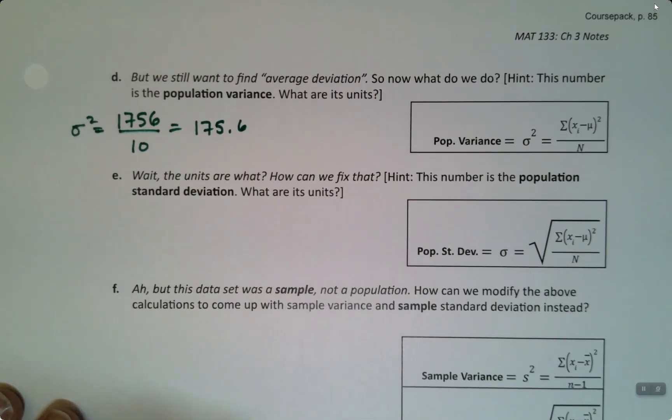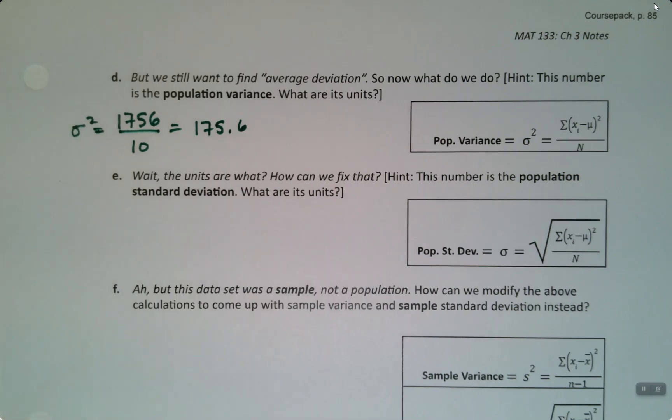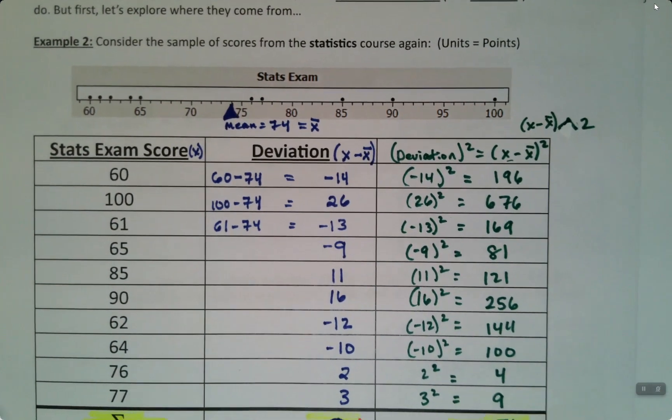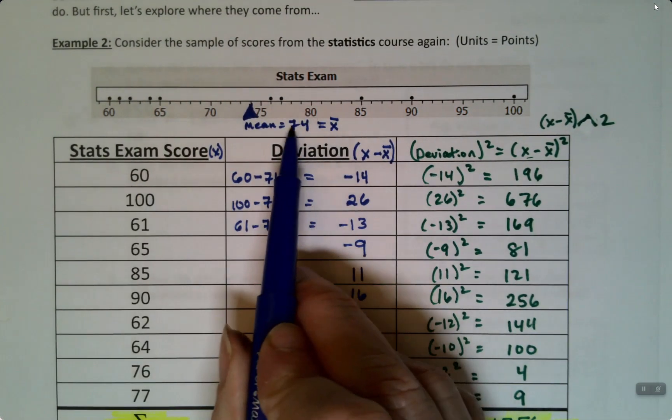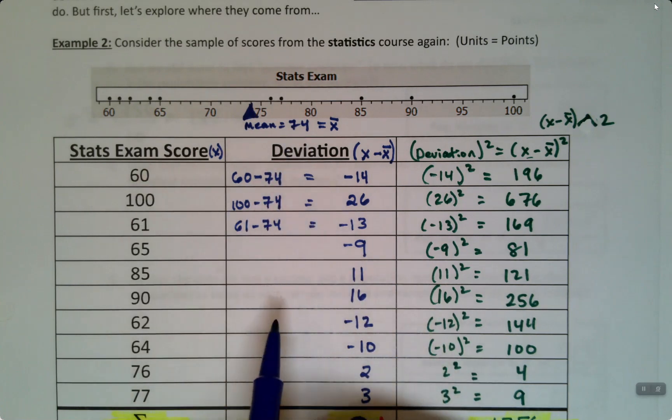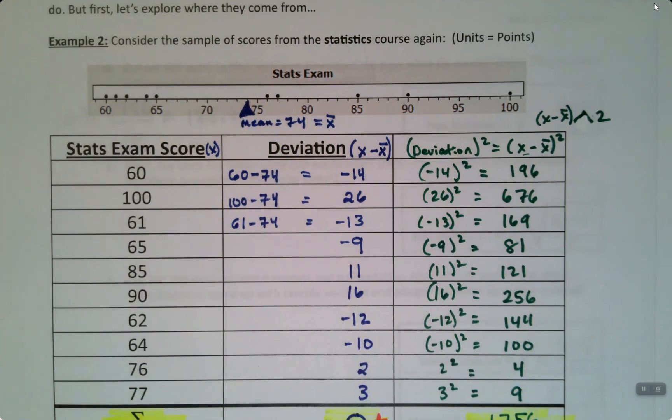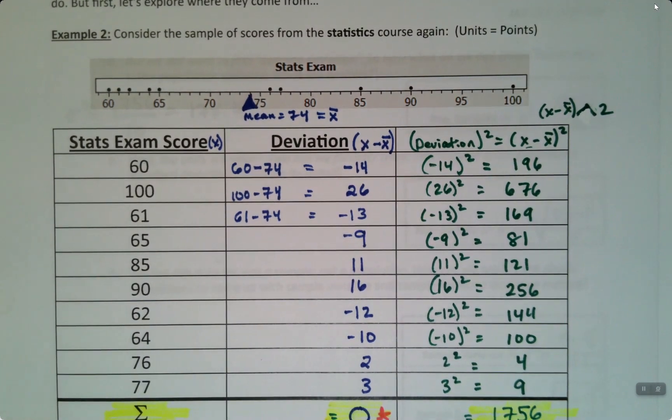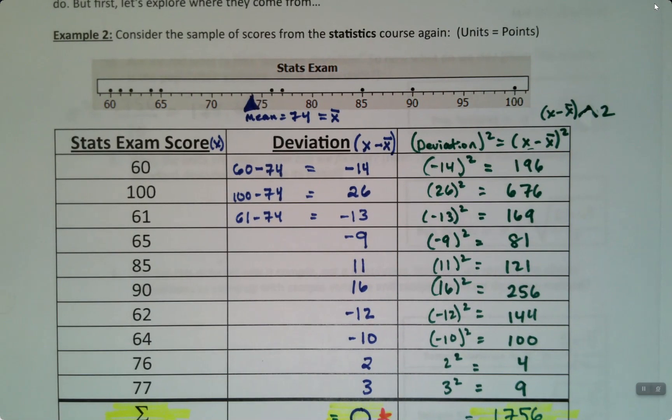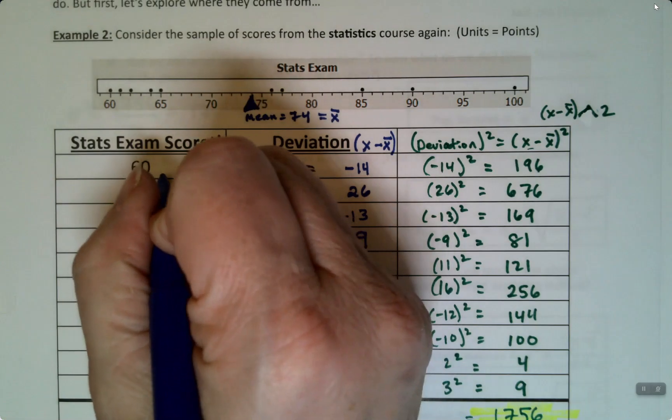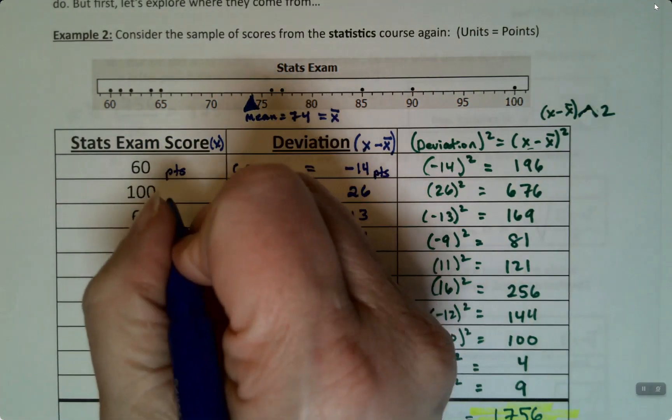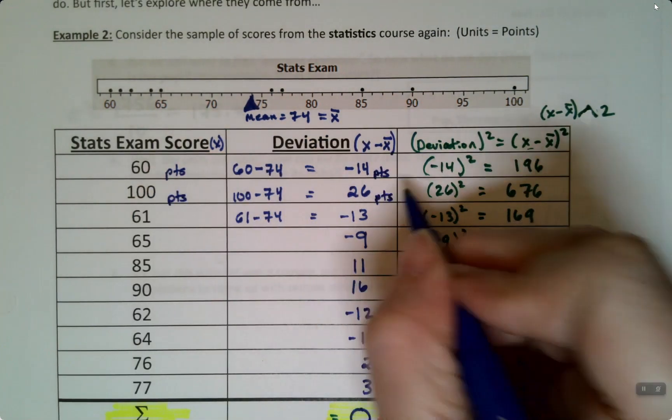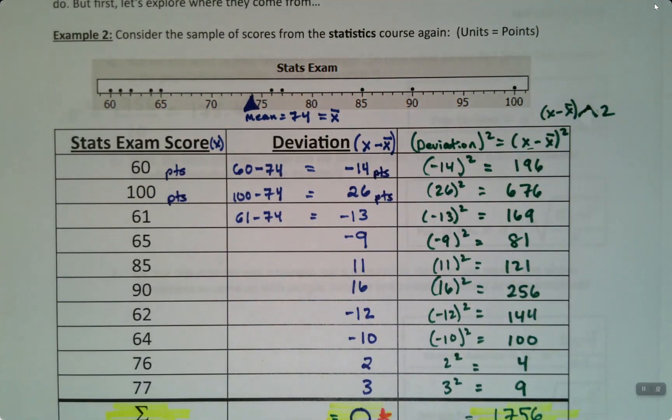So what are the units? Let's think about this. If I look at the deviations, this is points and this is points, so these were both points. Now it's not always—it could be degrees Fahrenheit, or inches and inches. It's whatever the dataset has. For this particular problem, this was points and this was points.